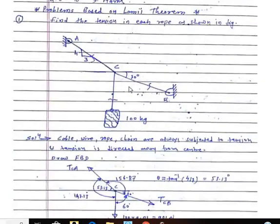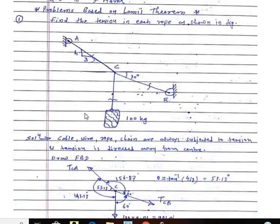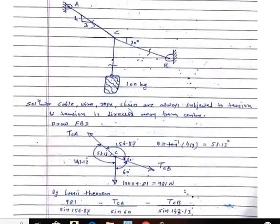Now we are going to discuss the actual problems. Find the tension in each rope as shown in the figure. A, C, B, C, and a mass of 100 kg is hanging on the third cable. We have to calculate the tension in each cable — cable AC and cable BC. As we know, cables, wires, ropes, and chains are always subjected to tension.